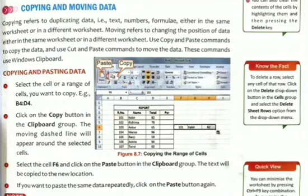Moving means we will change the position of any data — we are going to relocate the selected data. It may be on the same worksheet or in a different worksheet. For the moving operation, we are going to use two commands: cut and paste. These operations use the Windows clipboard.